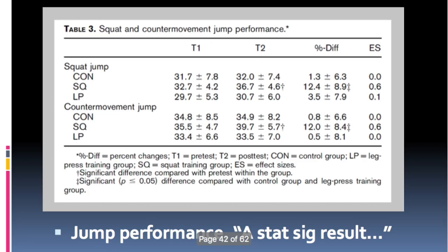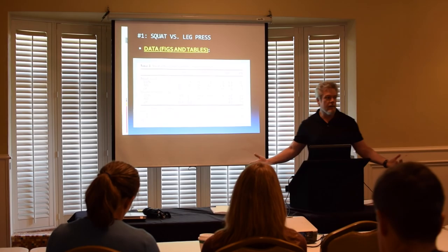It looks like there was a significant change in the squat jump and a significant change in the counter-movement jump in the squat group, whereas the others did not change to a great degree. So, out of the three variables — control, squat, and leg press — the squat was the only one that had a significant impact on both squat jump and counter-movement jump.